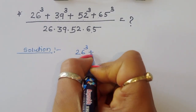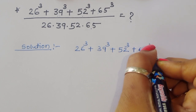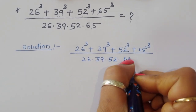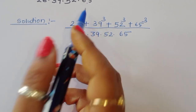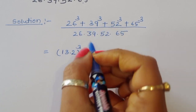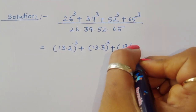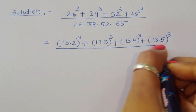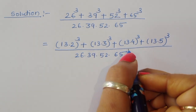Solution: 26 power 3 plus 39 power 3 plus 52 power 3 plus 65 power 3, divided by 26 times 39 times 52 times 65. We can write 26 as 13 times 2, so we write (13 times 2) power 3. Then 39 is 13 times 3, so (13 times 3) power 3. Then (13 times 4) power 3, and 65 is 13 times 5, so (13 times 5) power 3, all divided by 26 times 39 times 52 times 65.